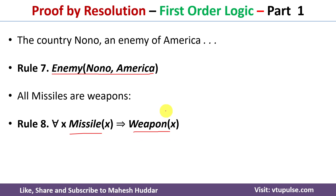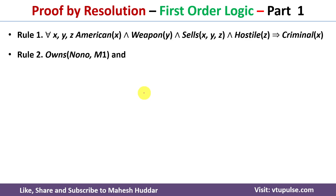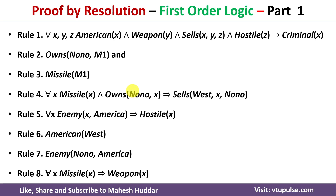Once all statements are in first order logic, we need to convert them into conjunctive normal form (CNF). We cannot perform proof by resolution on statements with implications or biconditionals. I have already discussed how to convert statements into CNF — the link is in the description. Briefly, I will explain how to convert each of these eight rules into CNF.